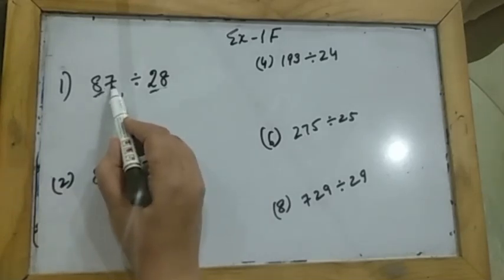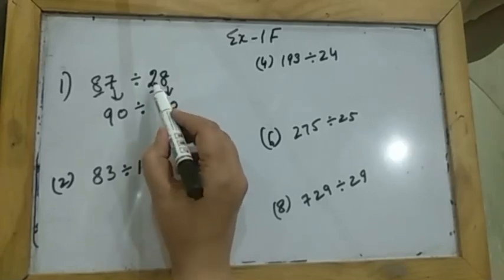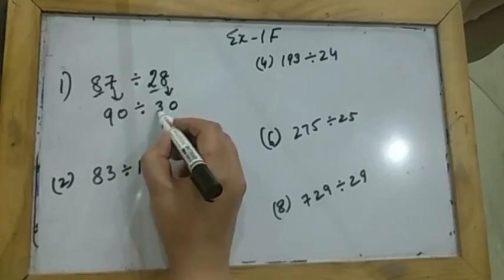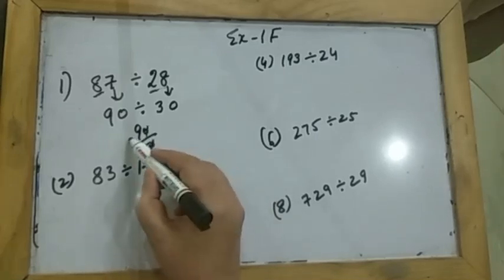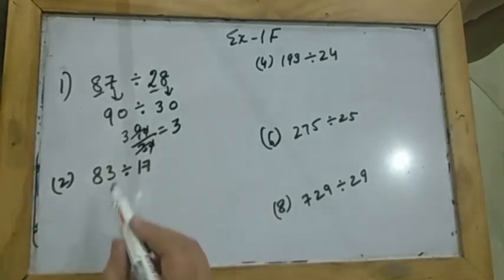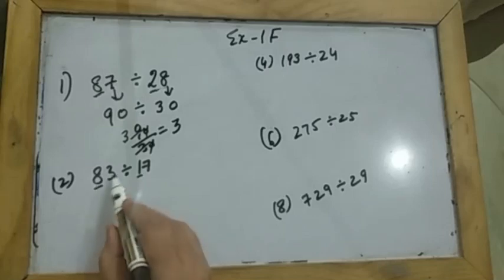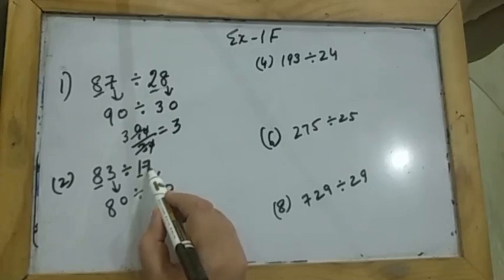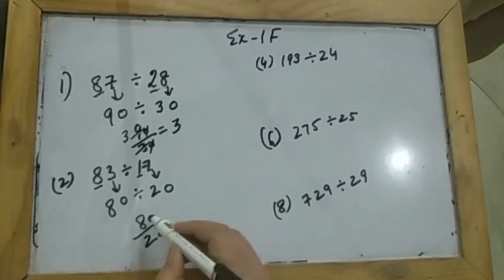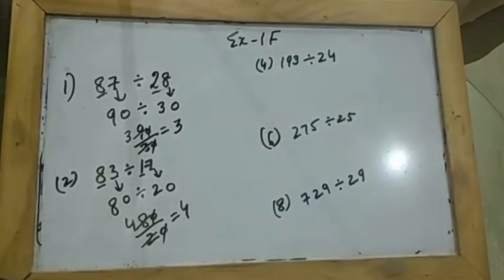Rounding to the nearest 10: to the right of 8 is 7, which is more than 5, so it becomes 9, giving 90. To the right of 2 is 8, more than 5, so 2 becomes 3, giving 30. When you divide, the zeros cancel and the answer is 3. For the next one, 8 remains 8 since the digit to its right is less than 5, giving 80. To the right of 1 is more than 5 so 1 becomes 2, giving 20. The zeros cancel and 2 fours are 8, so the answer is 4.